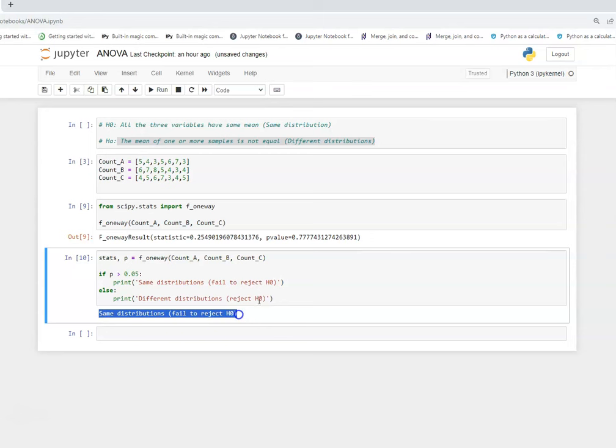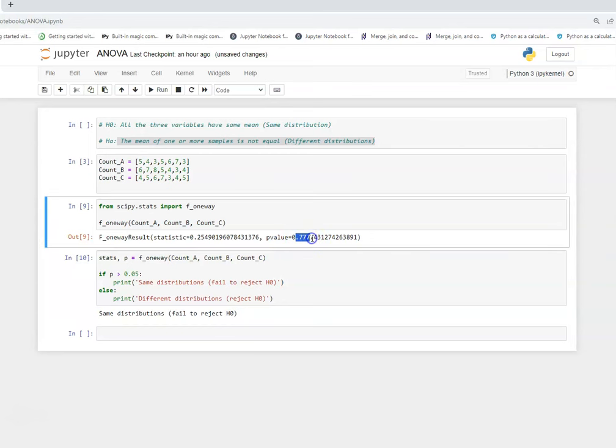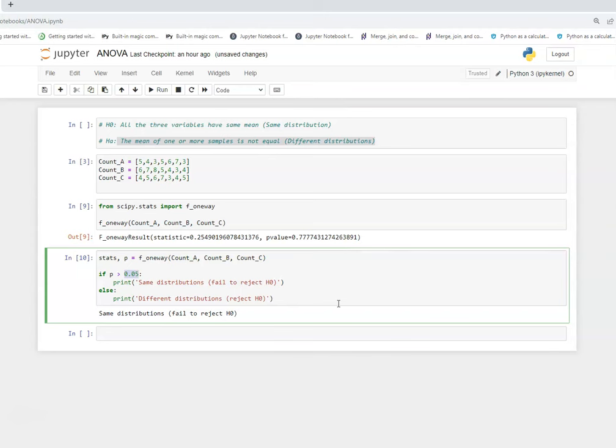The p-value is 77% which is quite high in contrast to the alpha that we have decided. So this is how you can apply ANOVA to your data before you do any kind of validation or any machine learning operation or you want to do some testing of distribution on your data.